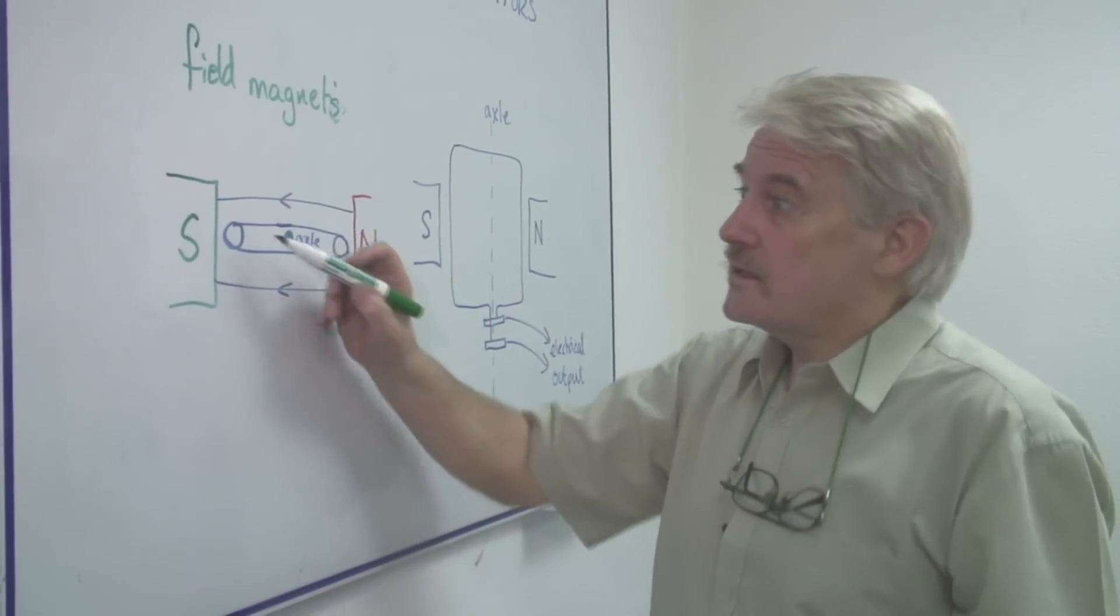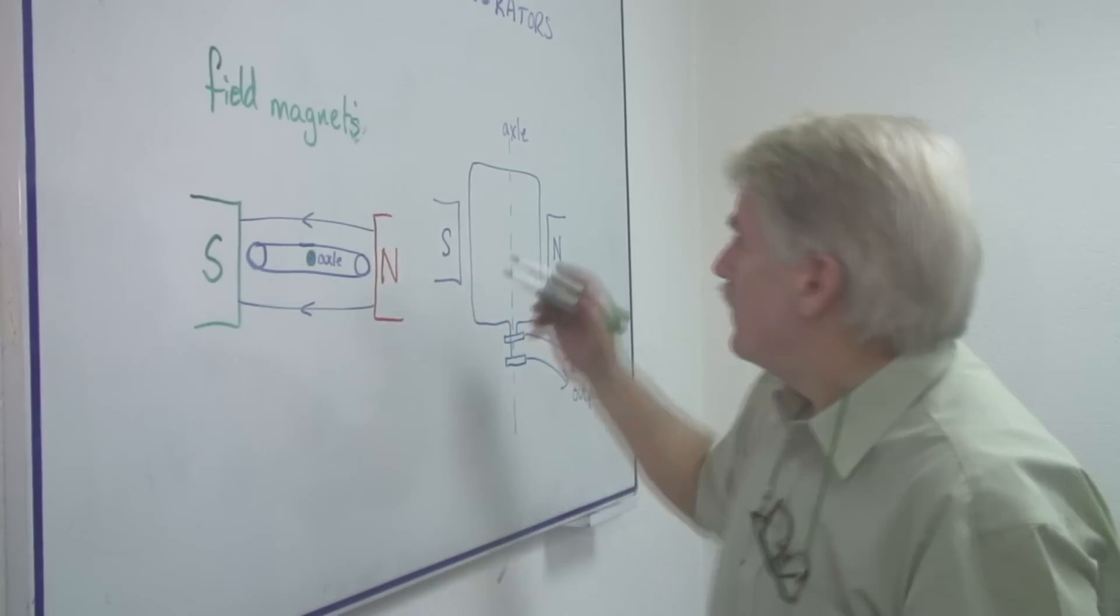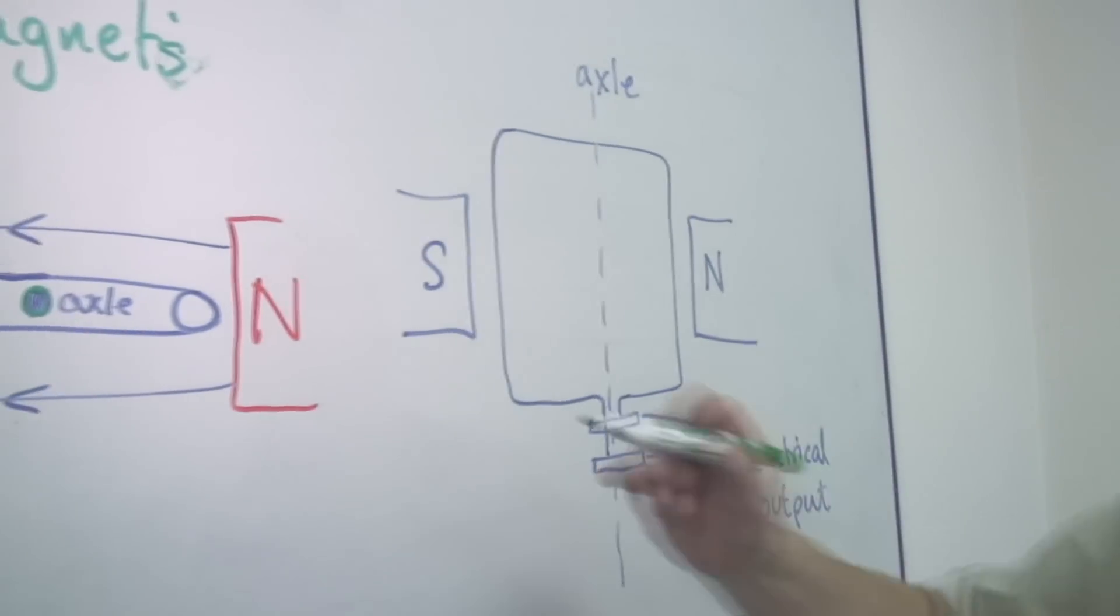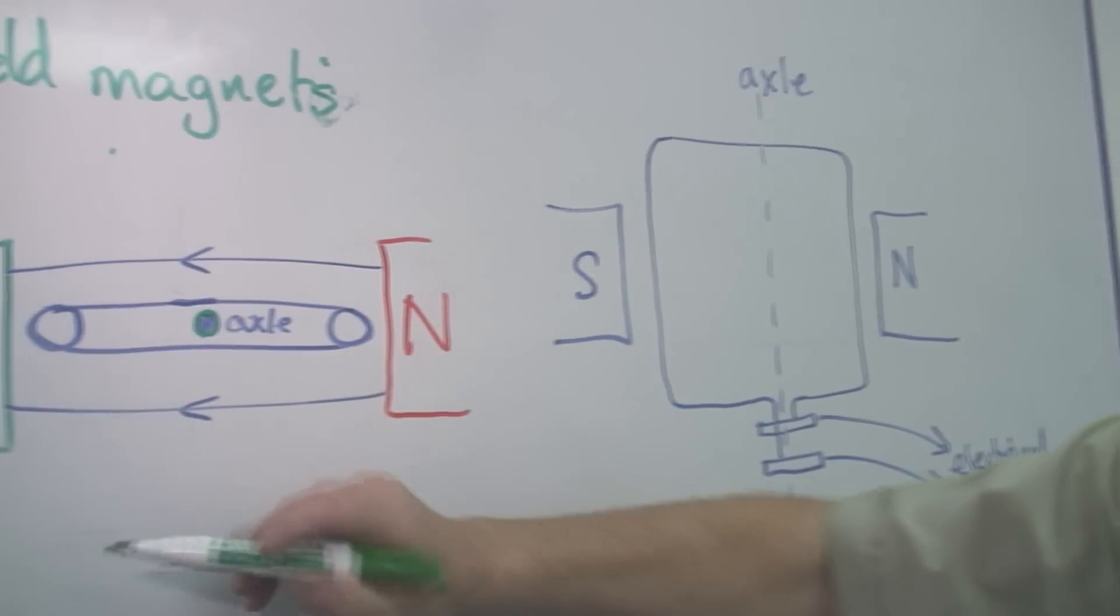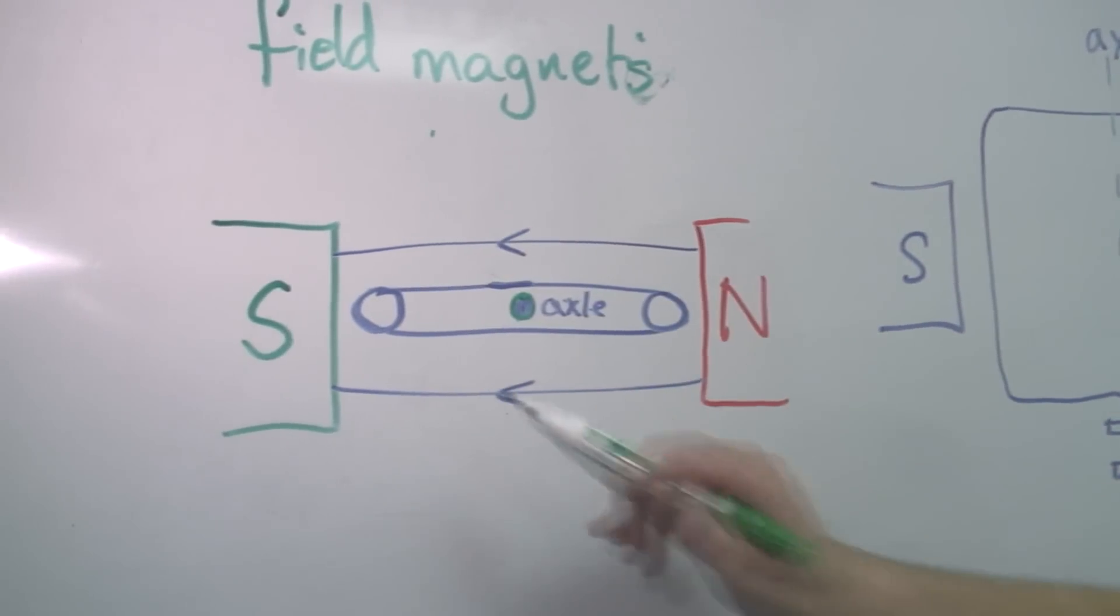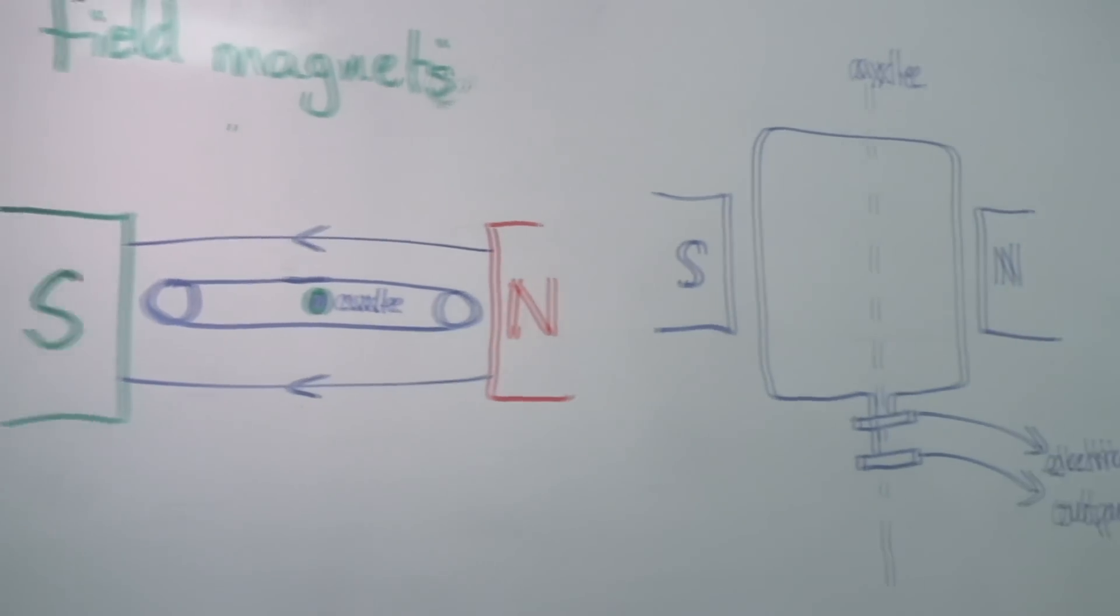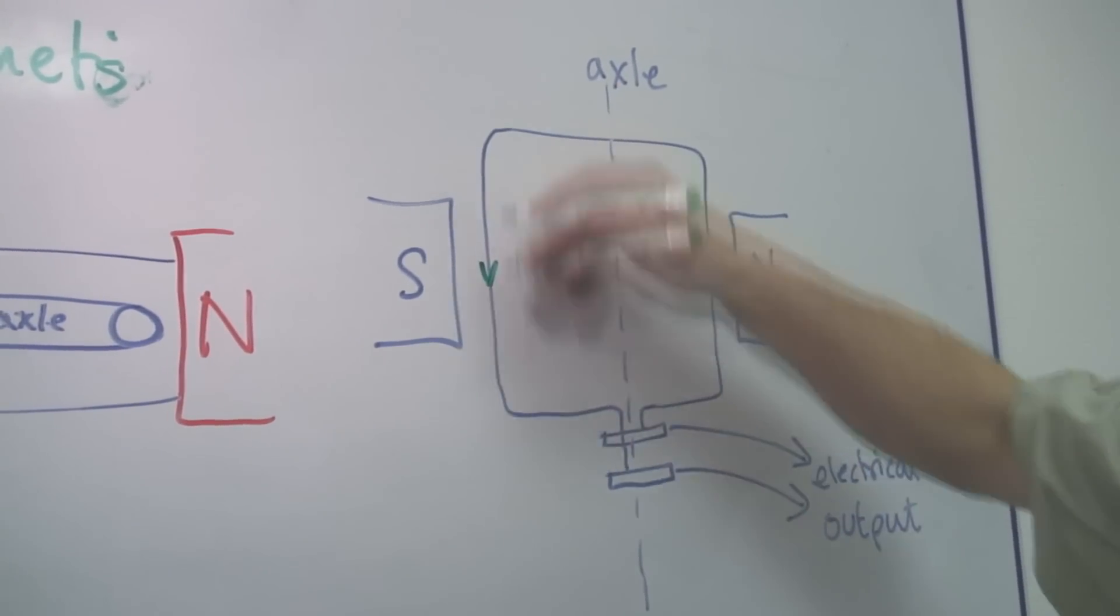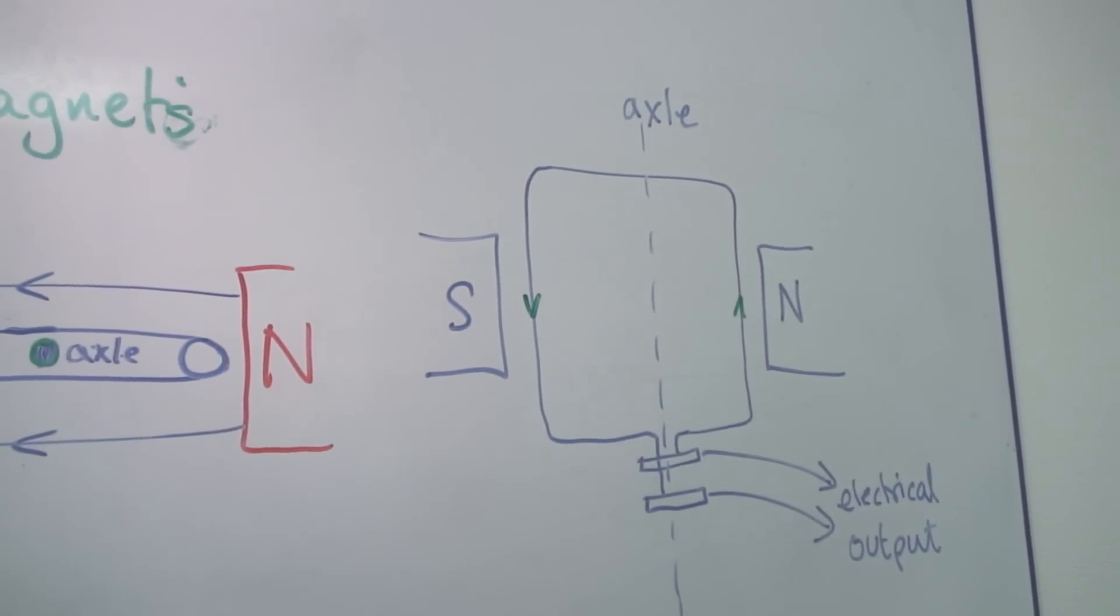And the fact is that when this wire, let's say this wire, this would be going down. When this wire goes through these field lines, in this wire you will get an electrical current. So as it goes down, it generates an electric current in this coil of wire.